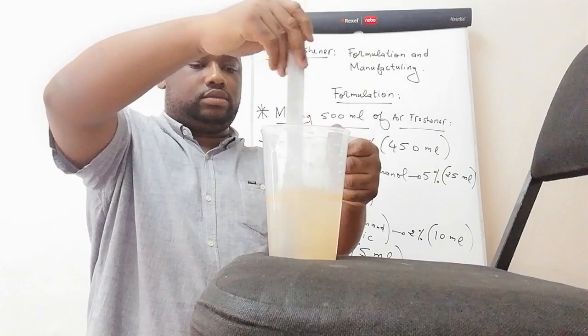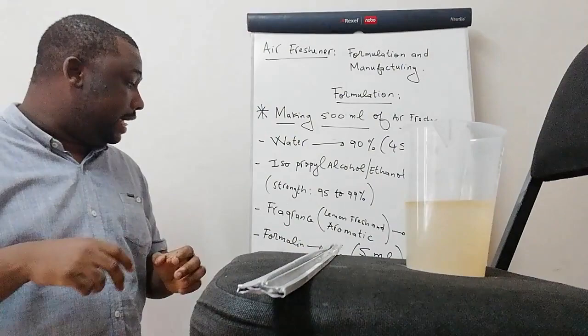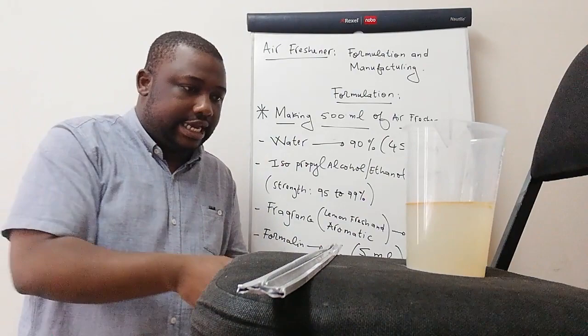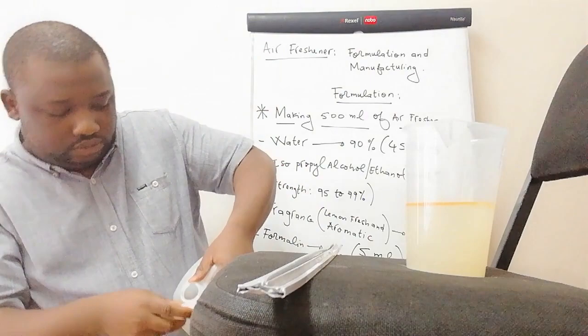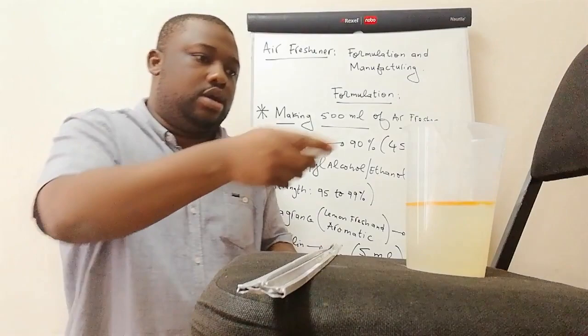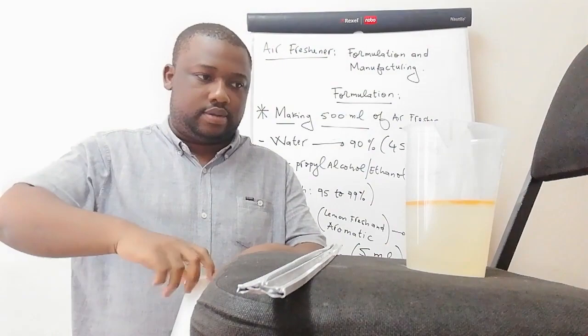The next ingredient to consider is your NP9. We said NP9 should be two percent of the total volume — we need about 10 mils of NP9. You can even go beyond 10 mils, as I said, you need to customize your formulation. It's a matter of mixing very well.